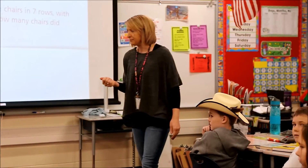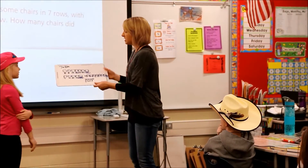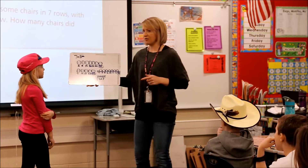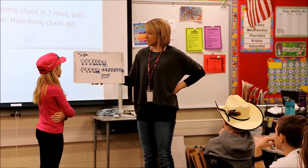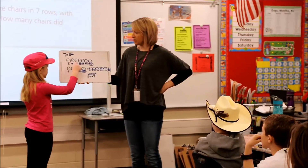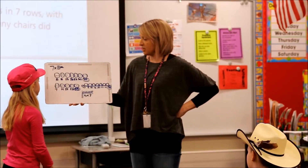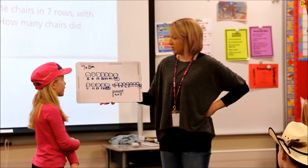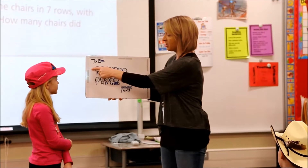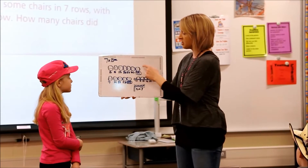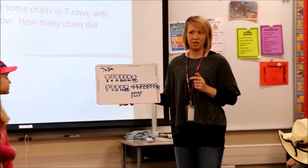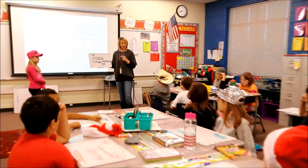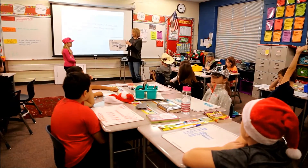Grace, could you please come up? Could you tell me about this problem that you did right here for us? So the problem was seven times five. So I do seven circles with five dots in each one. And then I count five, ten, fifteen, thirty-five. And I got thirty-five. Okay, so who can tell me why there's seven circles with five in each one? Brooks? Because there's seven groups of five. Very good.